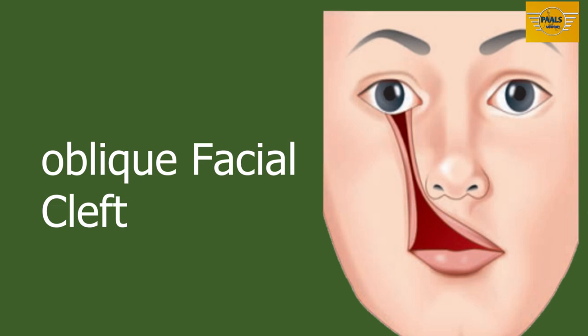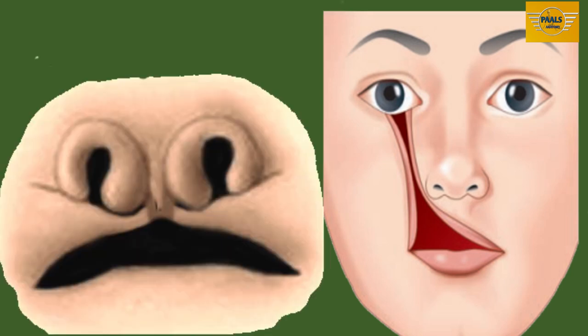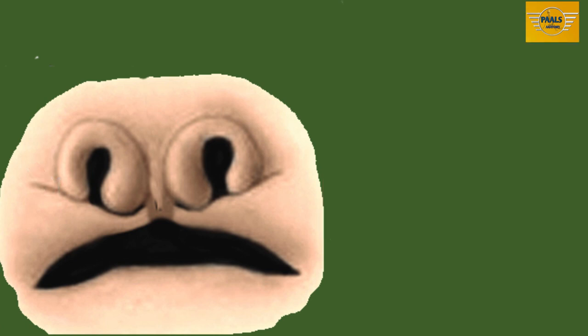Now we'll look at oblique facial cleft. Oblique facial cleft is when there is a non-fusion of the maxillary process with the lateral nasal process. This will give rise to a cleft running from the medial angle of the eye to the mouth. When this happens, the nasolacrimal duct is also not formed.